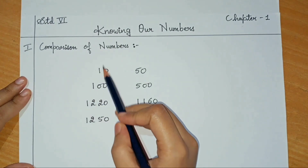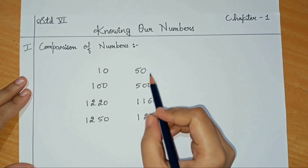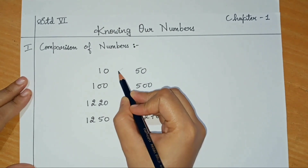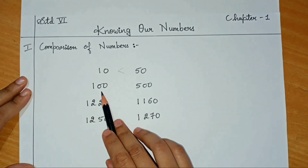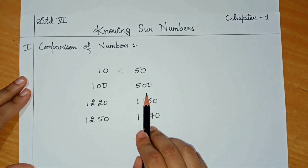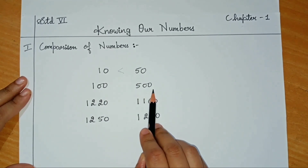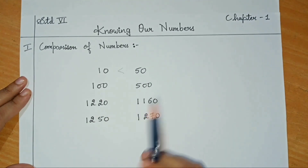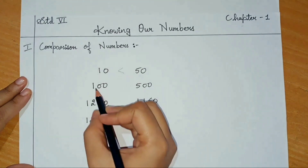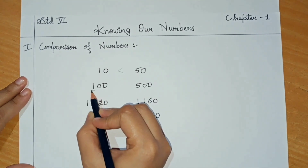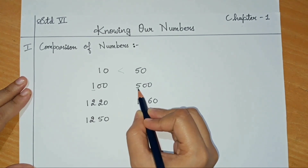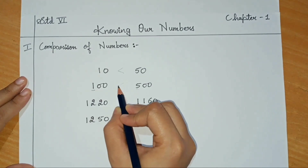If I ask you to compare number 10 with number 50, it is obvious that number 50 will be the greater number. Next, if I ask you to compare number 100 with number 500, you will say 500 is the greater number, but how should you do it actually? You have to always start comparing by the first digits. Here the first digit is 1 and here the first digit is 5. Since 5 is greater, we can say that 500 is a greater number.